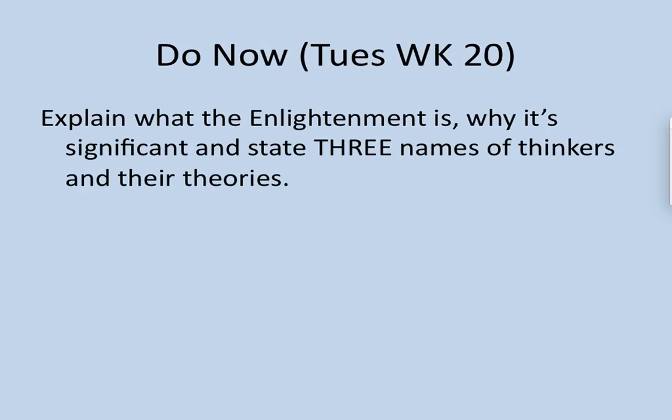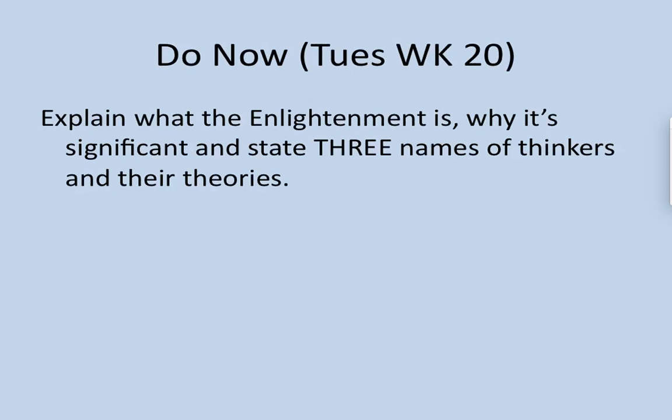All right, here we go. On the top of your notes, you're going to write Period 5, which is 1750 to 1900. I can't believe we're in 5 — isn't that crazy? Today is week 20, so you should have that in your notes to keep track. And then you need to have 'Enlightenment' — that's the first topic we are covering today.